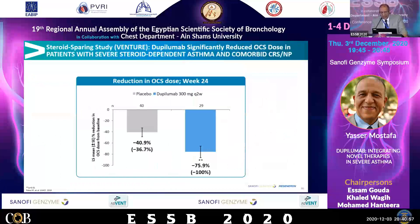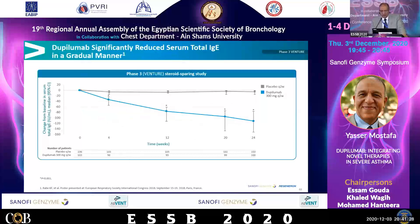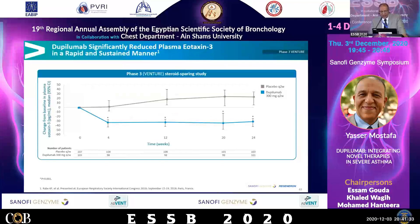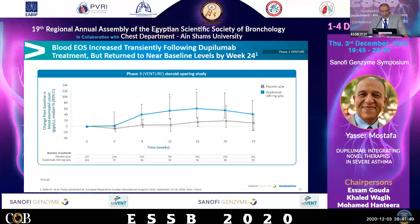The reduction in OCS dose in the dupilumab group was more than 75%. This was seen in patients with severe steroid-dependent asthma and comorbid chronic rhinosinusitis with nasal polyposis. Regarding biomarkers in the VENTURE study: IgE showed a gradual decrease by week 12 then slowly decreased till the end of the trial. Eotaxin-3 as a biomarker decreased by week 4 and was sustained till the end. Periostin similarly decreased significantly by week 4 and was sustained. Blood eosinophilia initially increased at the start of the trial then gradually decreased, approaching the baseline level by the end of the study. The safety profile was well tolerated with no significant serious adverse events.